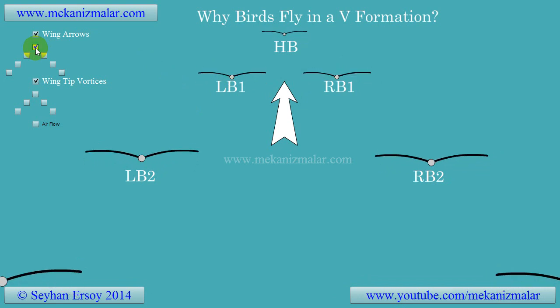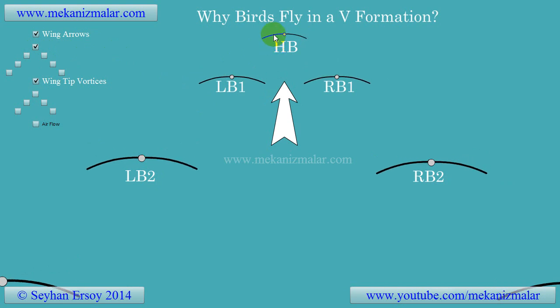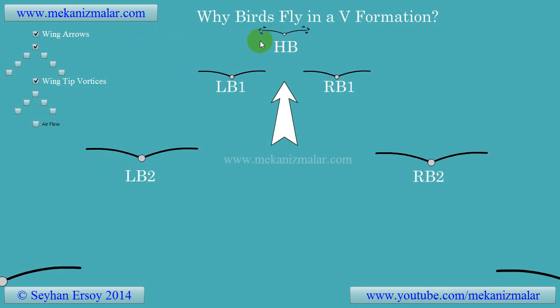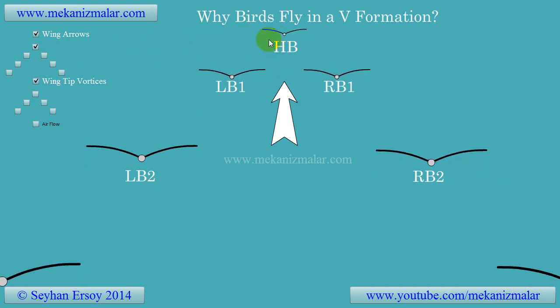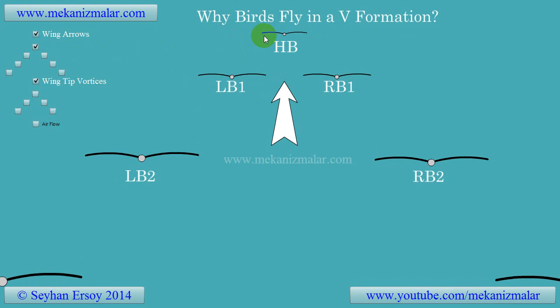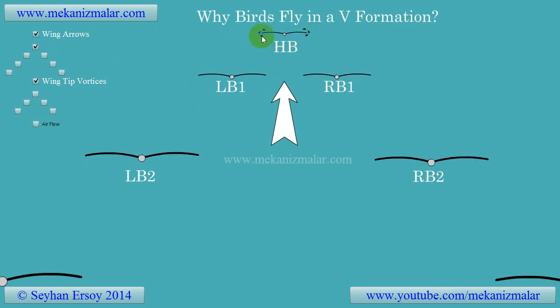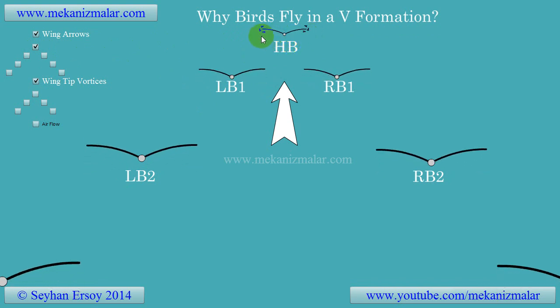Since the birds are moving forward, this flow of air is mostly observed at the tip of the wings, as shown in this animation with the red arrows during the down stroke.